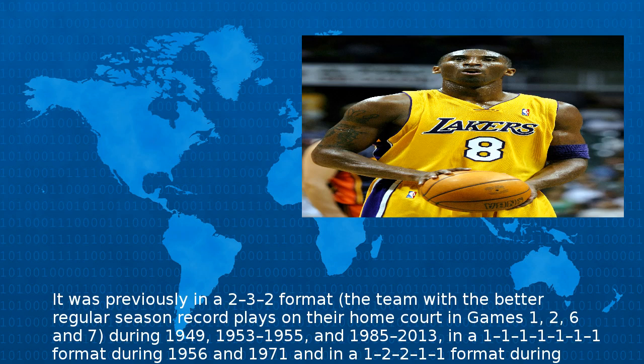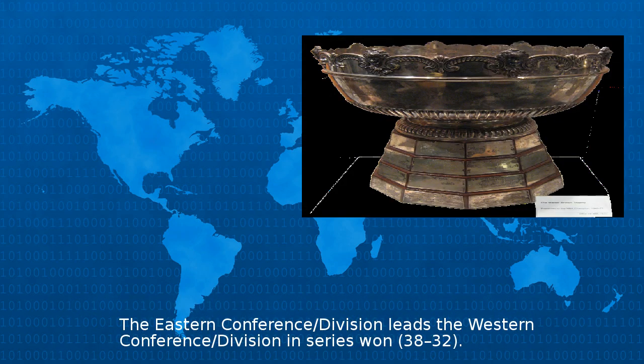It was previously in a 2-3-2 format, where the team with the better regular season record plays on their home court in games 1, 2, 6, and 7, during 1949, 1953–1955, and 1985–2013. Other formats used include a 1-1-1-1-1-1-1 format during 1956 and 1971, and a 1-2-2-1-1 format during 1975 and 1978.